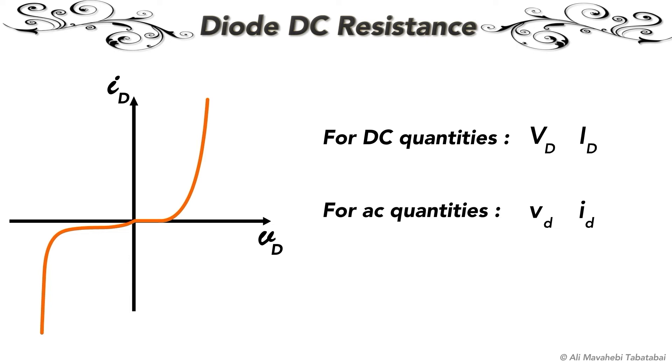Lowercase letters with lowercase subscripts are used for AC quantities. And lowercase letters with uppercase subscripts are used when an electrical quantity contains both DC and AC components.